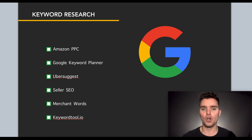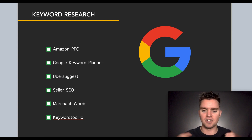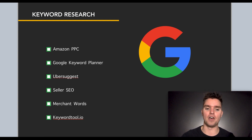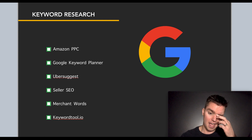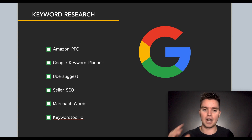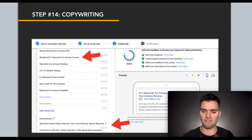Another great free tool is Ubersuggest by Neil Patel. There's also Seller SEO, which is used specifically for Google ads and Amazon together. Paid tools include Merchant Words and KeywordTool.io. With all these tools, what you're trying to find are keywords that specifically relate to your product and only your product — build a massive list, include those into your ad group, and then finally we get to the actual ad creation.